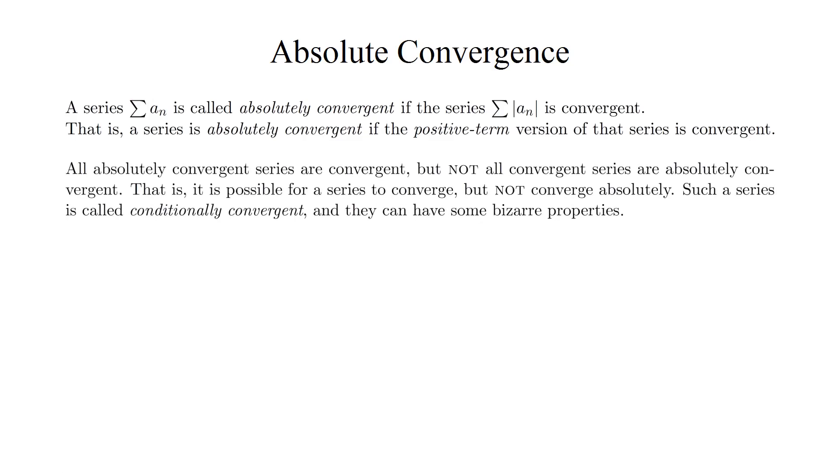This is a stronger notion of convergence because all absolutely convergent series are also convergent in the usual sense, but not the other way around. It is possible for a series to converge, but not converge absolutely. Such a series is called conditionally convergent, and they can have some bizarre properties.